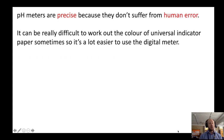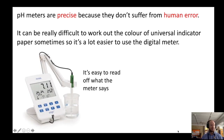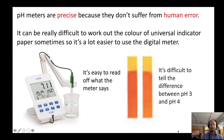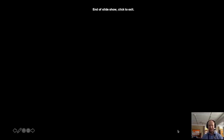pH meters are more precise because they don't suffer from human error. Sometimes it can be really difficult to work out the color of universal indicator paper, so it's a lot easier to use the digital meter. It's very easy to read off what the meter says, and it's very difficult to tell the difference between pH 3 and pH 4 on paper, so you could get it wrong. Thank you very much guys.